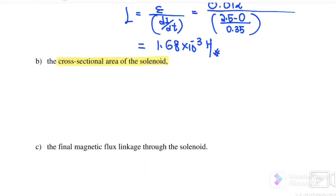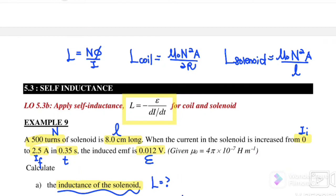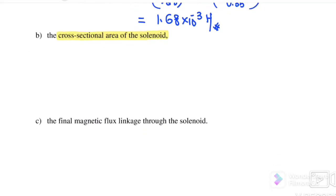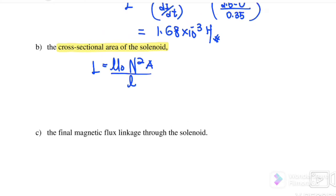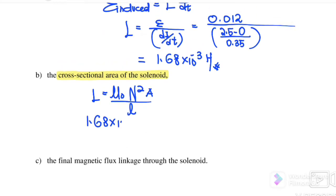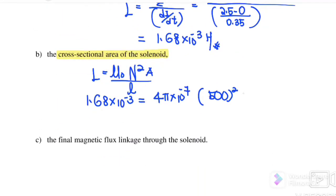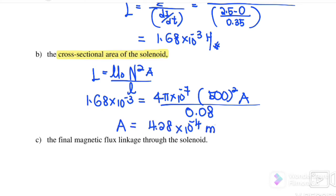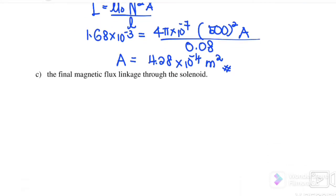Next, find the cross-sectional area of the solenoid using L equals μ₀N²A over length. Substituting: L is 1.68×10⁻³, μ₀ is 4π×10⁻⁷, N is 500 turns, length is 8 cm which is 0.08 m, and A is the unknown. Therefore, the cross-sectional area is 4.28×10⁻⁴ m².